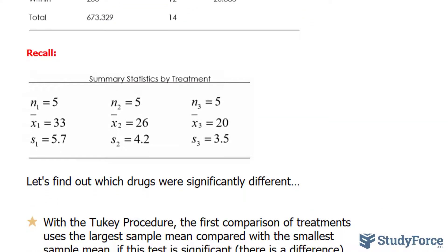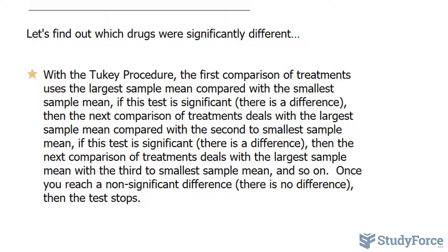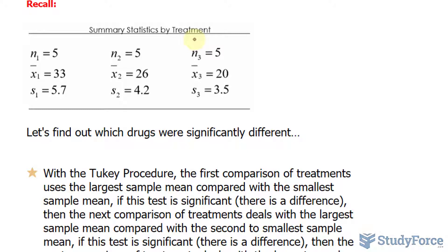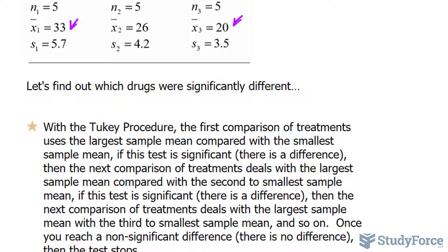We learned how to do this with the Scheffé procedure, but the Tukey procedure has its benefits as well. With this procedure, the order of how you compare the means matters. The first comparison uses the largest sample mean compared with the smallest sample mean. Once you've compared these two groups, if the test is significant — meaning there is a difference and you accept the alternative hypothesis — you continue. This cycle goes on until you reach a non-significant difference, at which point the test stops.